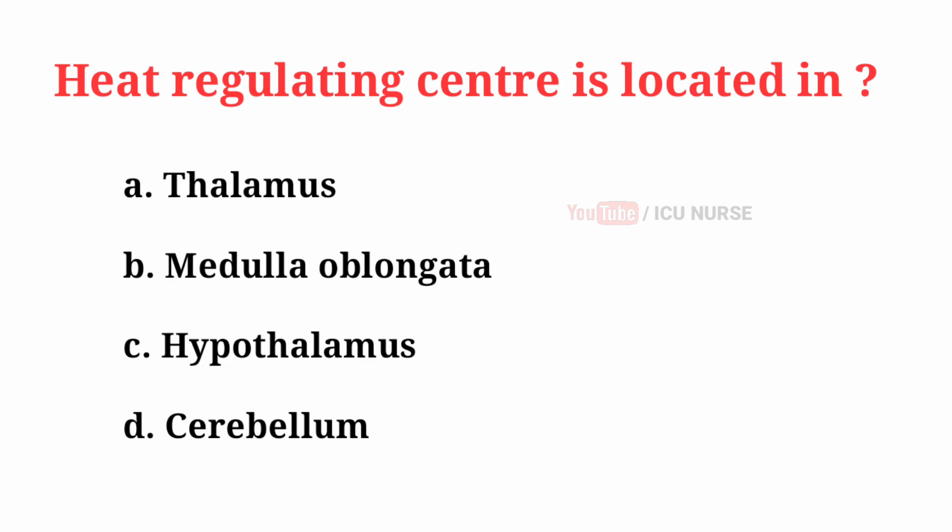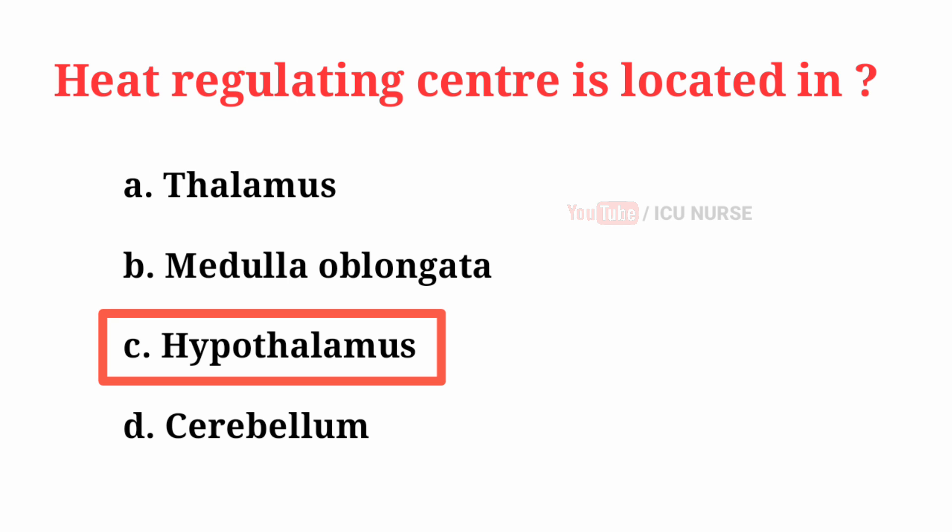Heat regulating center is located in — the correct answer is C: Hypothalamus.